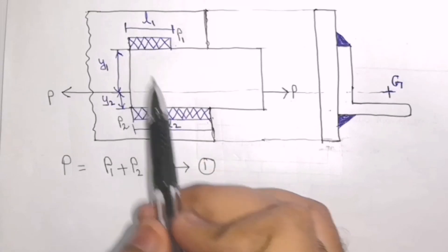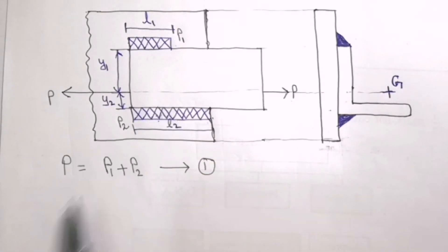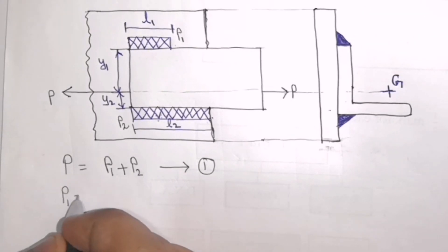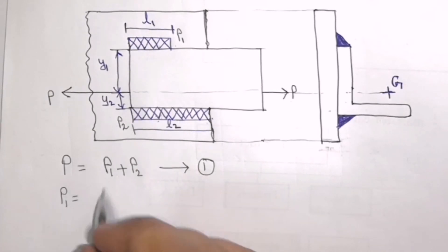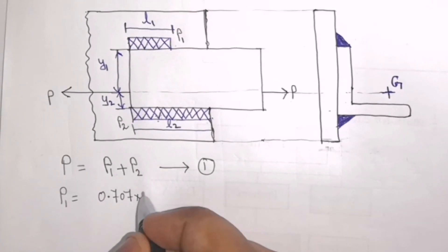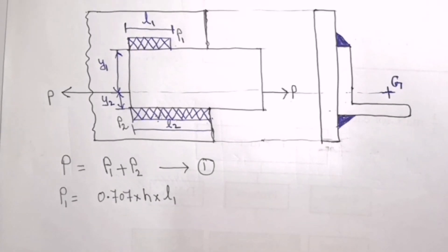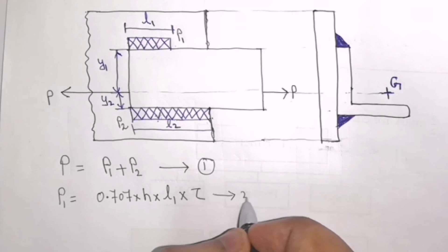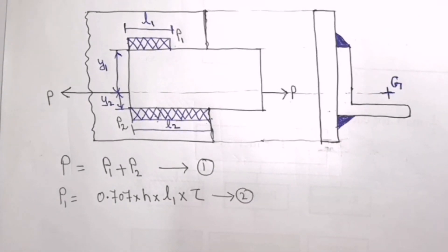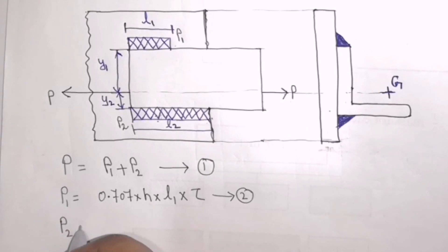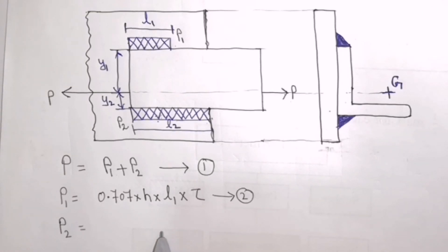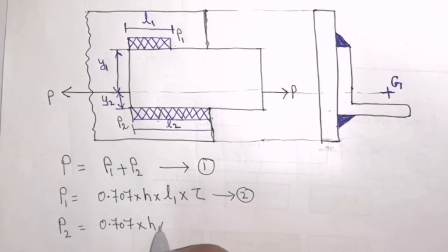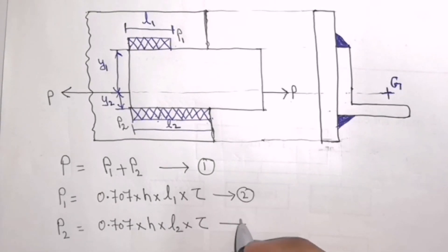As both welds will be experiencing shear force, I can write P1 is equal to the area of this weld, which is 0.707 multiplied by H multiplied by L1, times the shear stress tau. Let this be equation 2. Similarly, P2 is equal to 0.707 multiplied by H multiplied by L2 multiplied by tau. Let this be equation number 3.